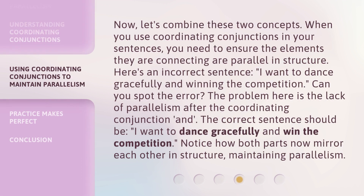Now, let's combine these two concepts. When you use coordinating conjunctions in your sentences, you need to ensure the elements they are connecting are parallel in structure. Here's an incorrect sentence: 'I want to dance gracefully and winning the competition.' The problem here is the lack of parallelism after the coordinating conjunction 'and.' The correct sentence should be: 'I want to dance gracefully and win the competition.' Notice how both parts now mirror each other in structure, maintaining parallelism.